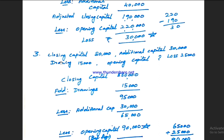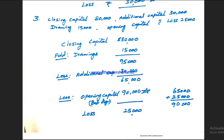For Exercise 3: closing capital is 80,000, additional capital is 30,000, drawings is 15,000, and opening capital needs to be found. Applying the format: closing capital 80,000, add drawings 15,000, less additional capital 30,000. The resulting loss is 25,000. Opening capital is calculated from these figures.